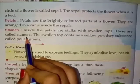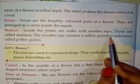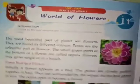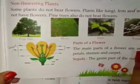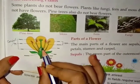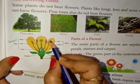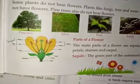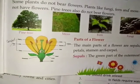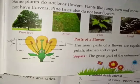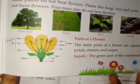These are called stamens. The swollen top contains a yellow powdery substance called pollen grains. I have now seen the diagram here. This is the stalk. This is yellow and powdery — a powdery substance called pollen grains.